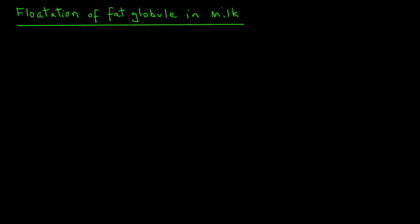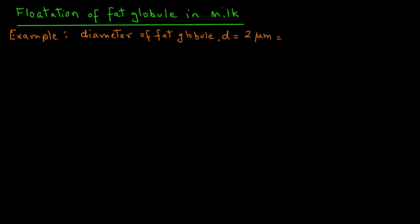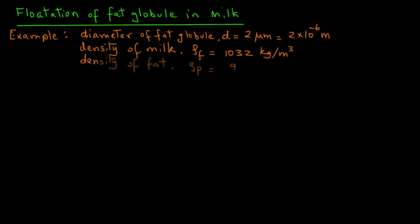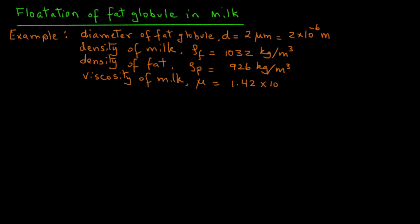We will try to determine how long it takes for a fat globule to float up to the surface of milk. The diameter of a fat globule is about 2 microns, or 2 micrometers, which is equal to 2×10⁻⁶ meters. Density of milk serum — non-fat milk — rho_f, is 1032 kg/m³. Density of fat globules, rho_p, is 926 kg/m³. And the viscosity of the milk serum, mu, is 1.42×10⁻³ kg/(m·s).